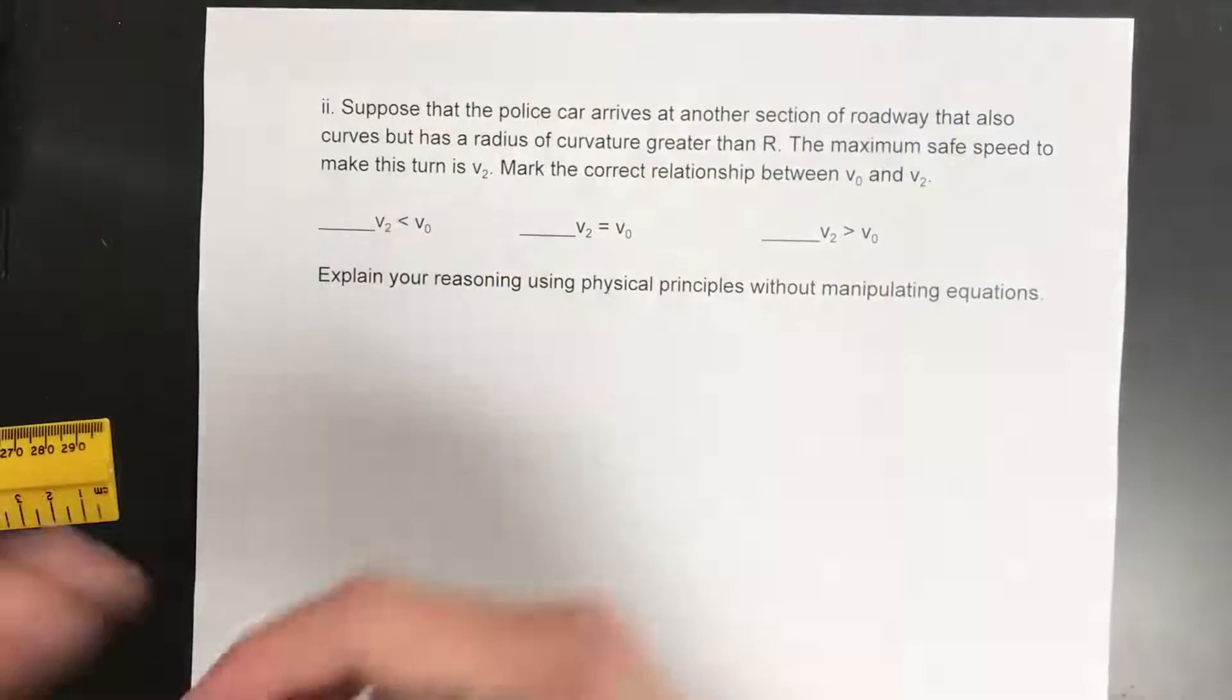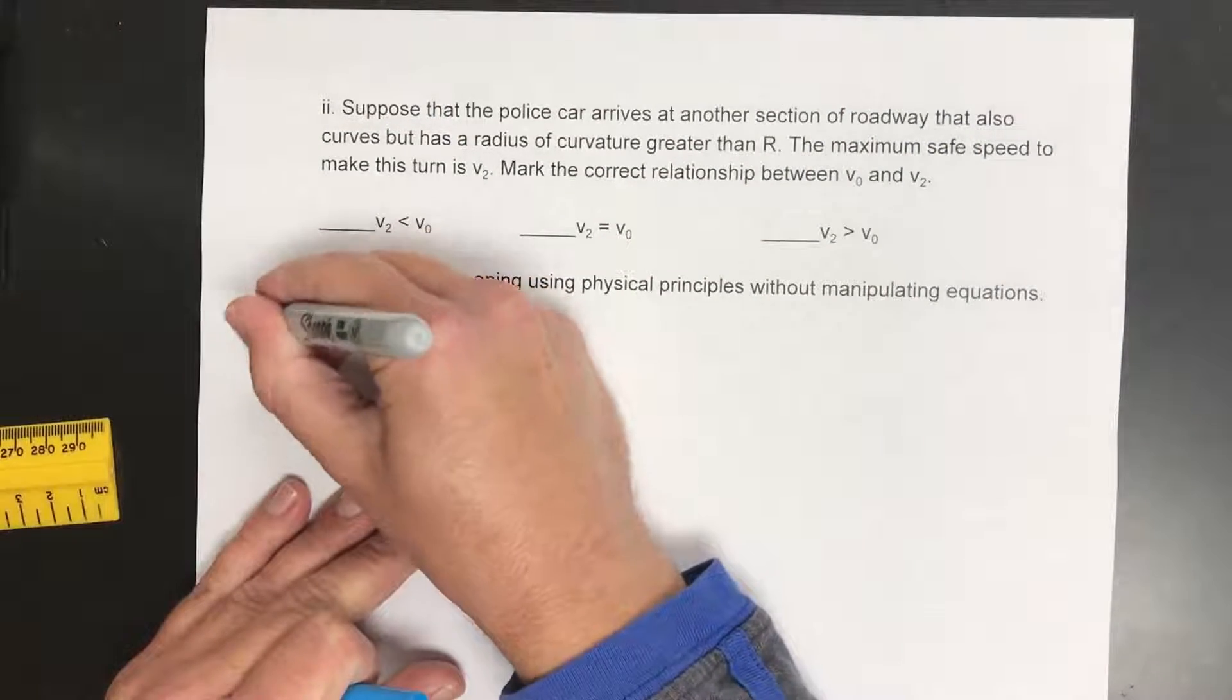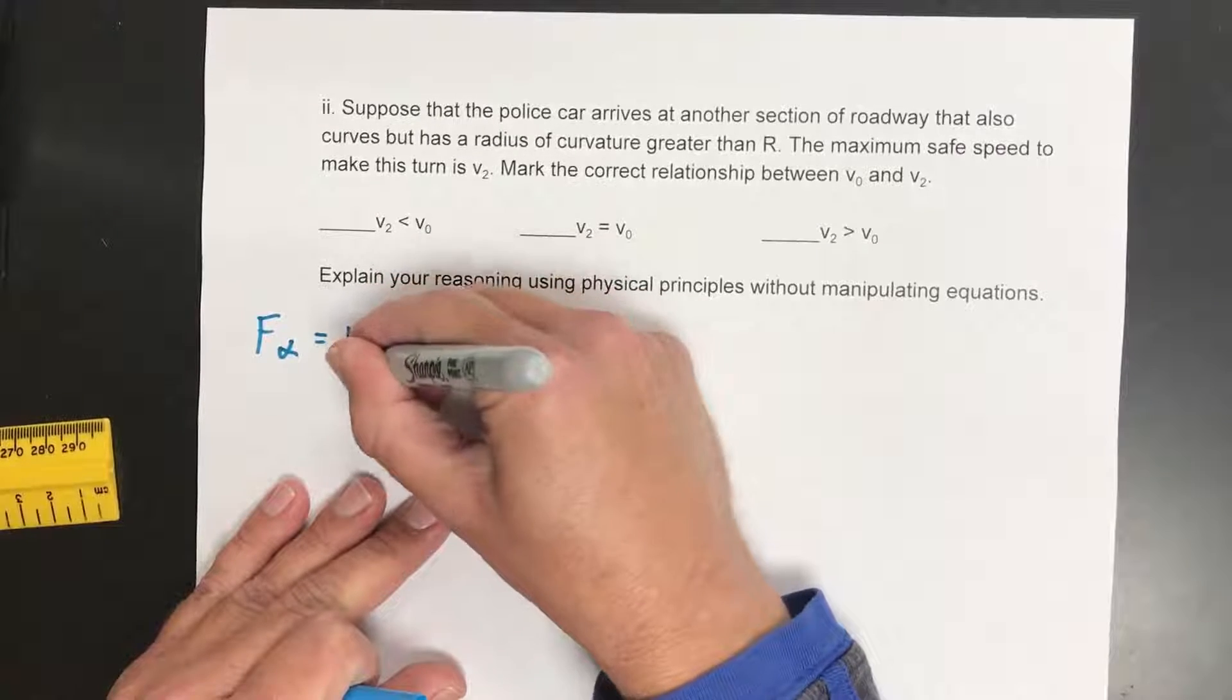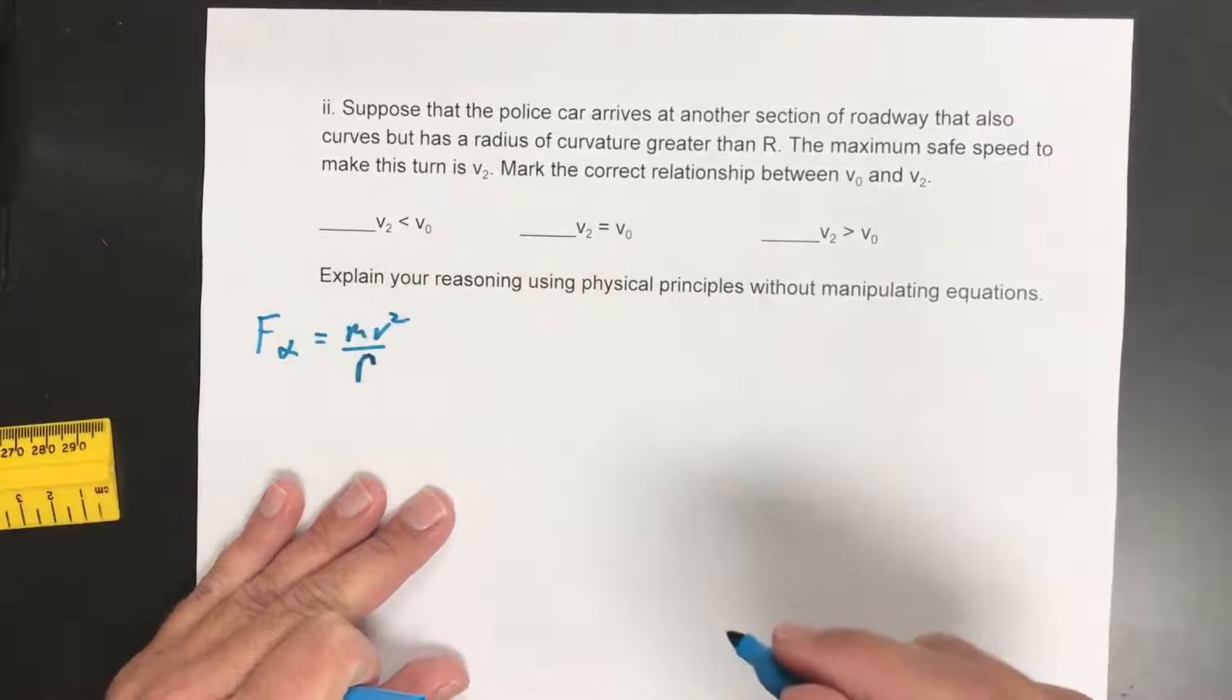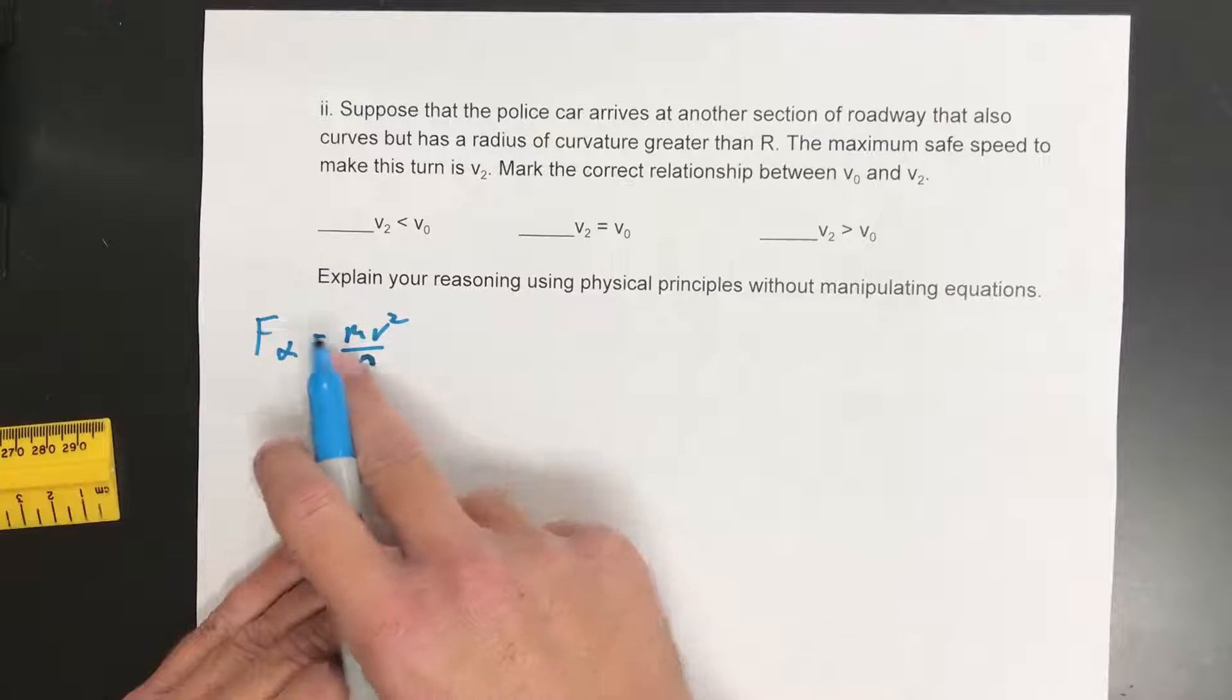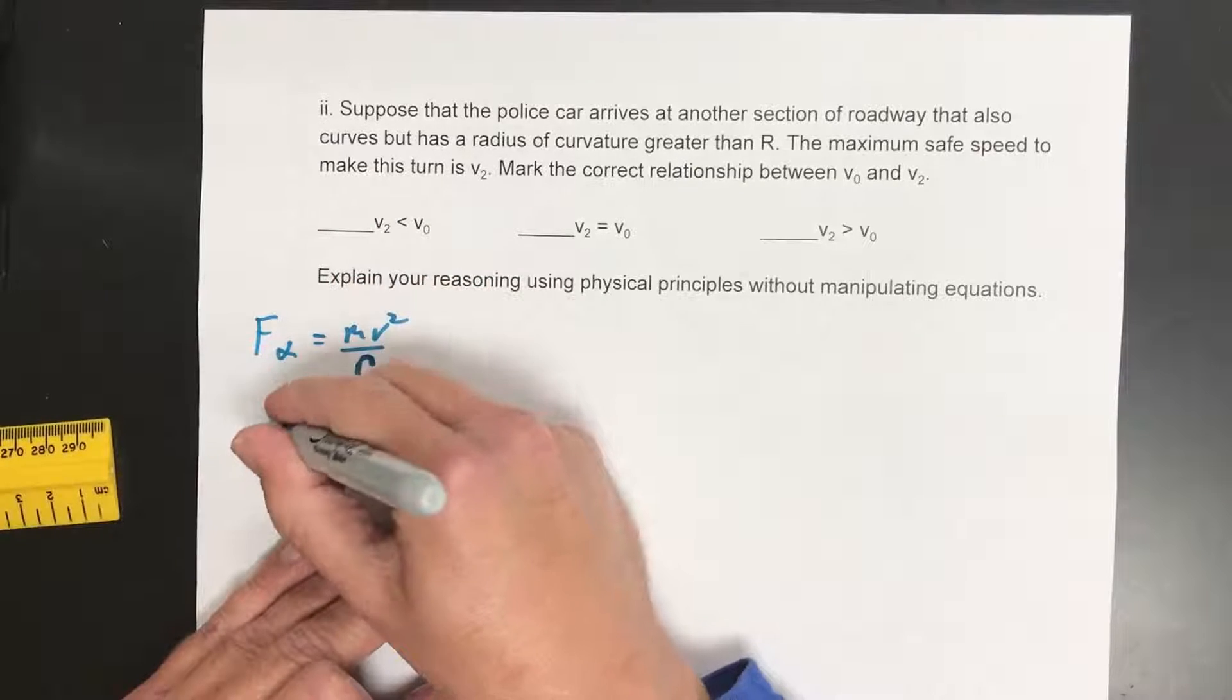So let's go back to what we mentioned before. The centripetal force is equal to mv squared over r. So if we look at this, the bigger the radius we have, the bigger this number is, the smaller this gets, the less centripetal force we need.